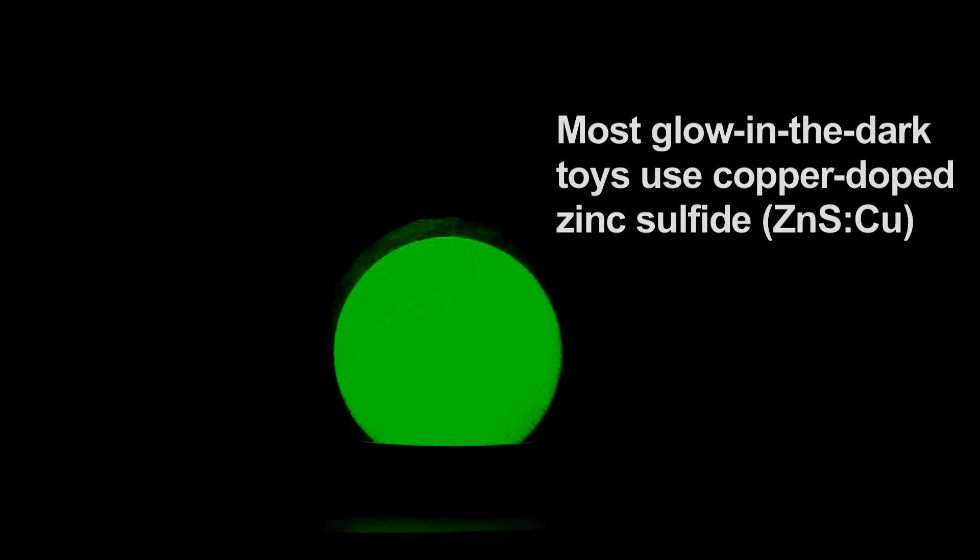Any glow-in-the-dark toy can illustrate the basic principles of creating laser light. This glows because the zinc-copper-based compound coating the inside can absorb energy from a light source and then later radiate as light. The light provides energy to electrons in the coating, promoting them to higher energy levels.